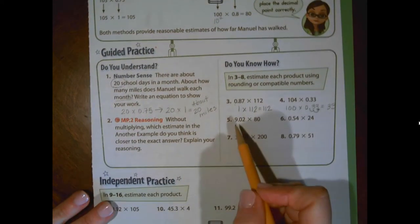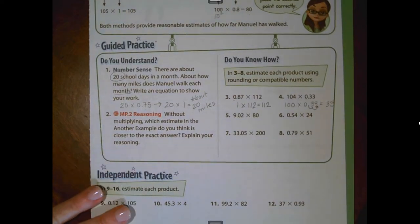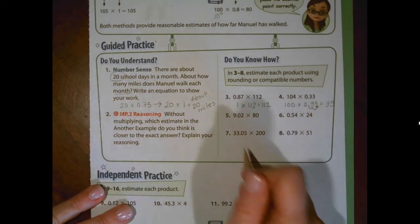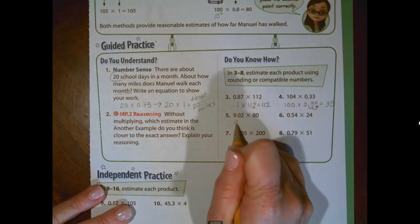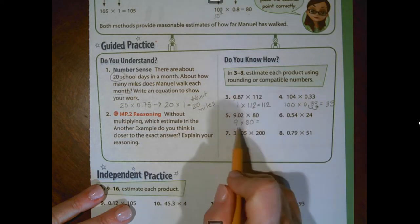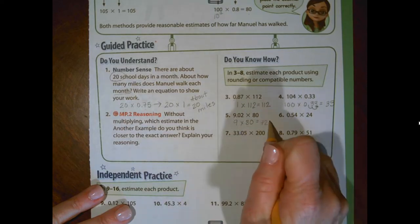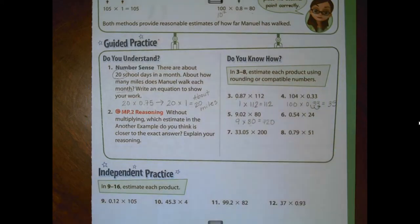Let's take a look at number five. 9.2, I'm going to round that to nine, the nearest whole number. I know how to multiply times multiples of 10. Nine times eight gives me 72. So I annex that zero because I'm multiplying nine times 80, and I'm going to get an estimate of 720.